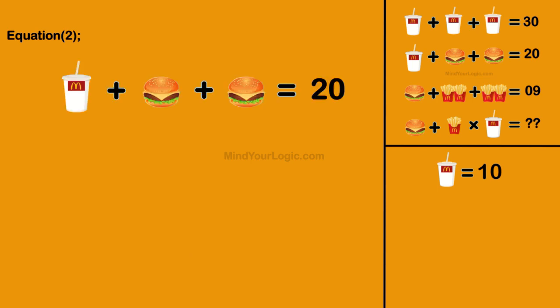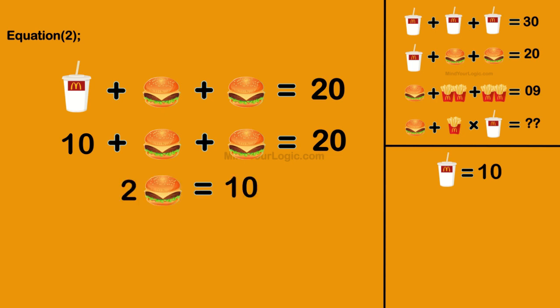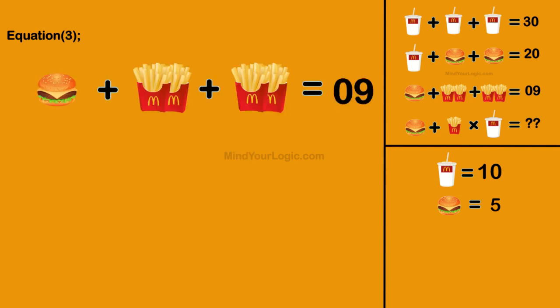Moving to equation 2: McDonald's Drink plus Burger plus Burger equals 20. Substituting the value of Drink, we get the value of Burger as 5.